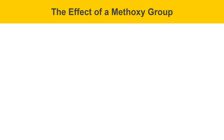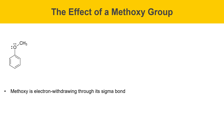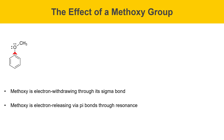The methoxy group has two different effects on the aromatic ring. Methoxy is electron withdrawing through its sigma bond — the oxygen pulls electron density out of the ring through the sigma bond and makes the carbon it's bonded to electron poor. This inductive effect doesn't transmit far over distance; it's strongest over one bond and much weaker over additional bonds. The other effect is that the methoxy group is electron releasing via its pi bonds through resonance. The resonance donation of electron density has the largest overall effect.